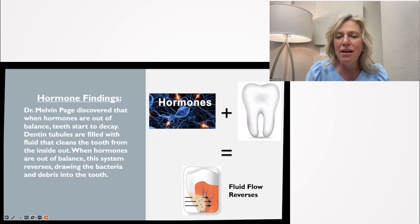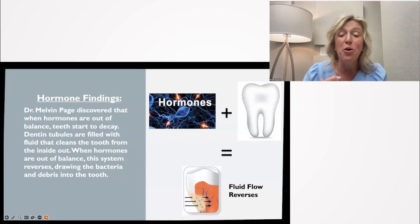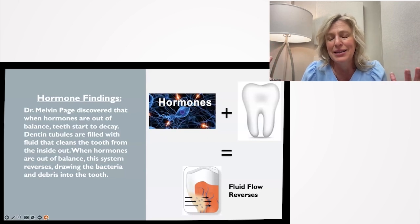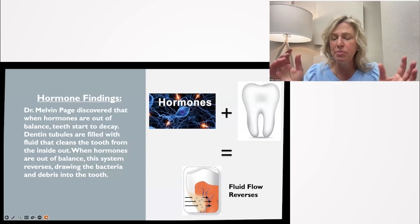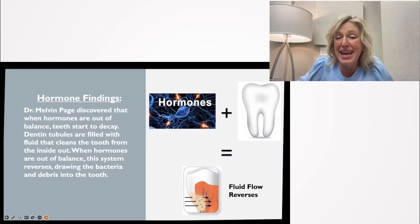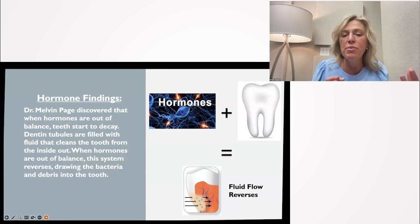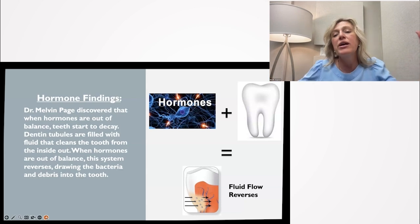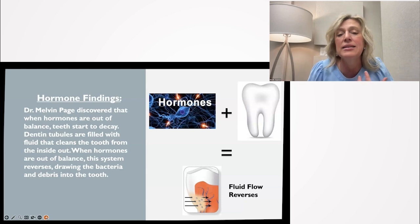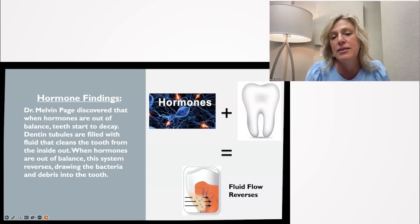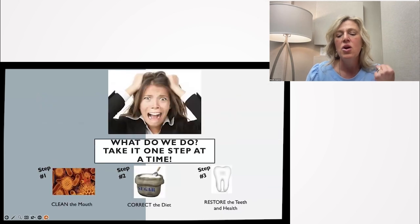The third theory was the hormone theory, discovered by Dr. Melvin Page. When hormones are out of balance, teeth start to decay. We see this particularly in two demographics: teenagers and pregnant women. Normally, fluid flows outward through the dentin tubes, expelling things from the tooth surface like an internal cleaning system. But when hormones are imbalanced, the flow reverses — literally drawing toxins, bacteria, and acids into the tooth, accelerating decay.